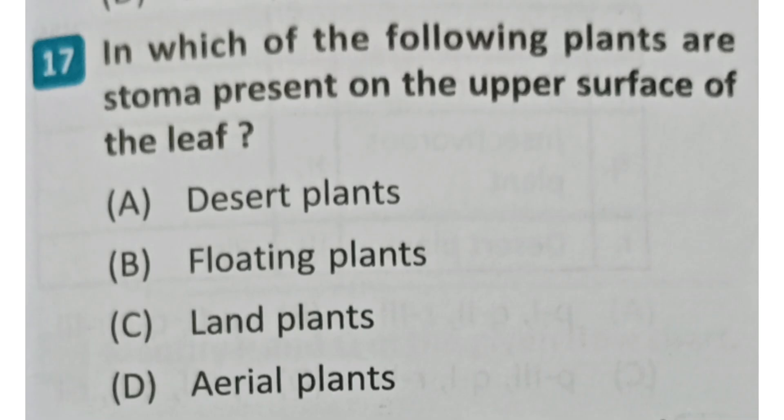Next question: In which of the following plants are stomata present on the upper surface of the leaf? Options: desert plant, floating plant, land plant, aerial plant. The correct answer is B - floating plant.